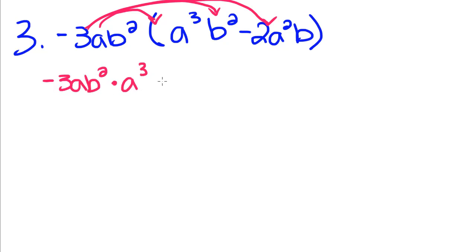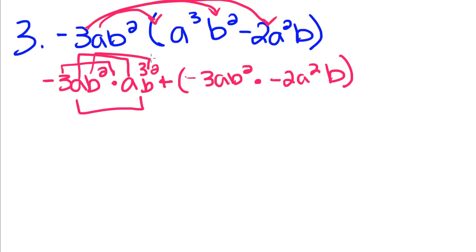I'm going to write this out just because this one is the first one like this we've done. When we multiply these two, we're going to multiply each little similar term together. We multiply that negative 3 with the understood 1 out in front of that a, so you're going to still get negative 3. Then we multiply a by a cubed, so a to the first times a cubed is going to give us a to the fourth. b squared times b squared is going to give us b to the fourth. Plus negative 3 times negative 2 is going to be positive 6, a times a squared is a to the third, b squared times b is b to the third.